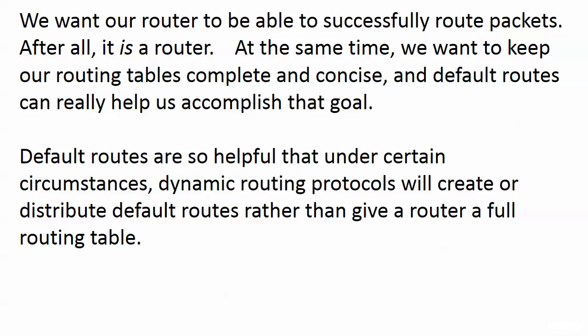A couple of words here about static routes and default static routes in particular as we wrap up this section. Some important stuff here because we want to keep our routing tables complete and concise. The router is going to parse the routing table and look through the entire routing table for the best match for a packet it needs to route. In some production networks you might see routers where the IP routing tables are two or three screens. We want the router to route packets wherever it needs to, but at the same time we want to keep that table concise — shrink it down whenever possible — because it makes the overall routing process much more efficient. Default routes can really help us accomplish that goal.